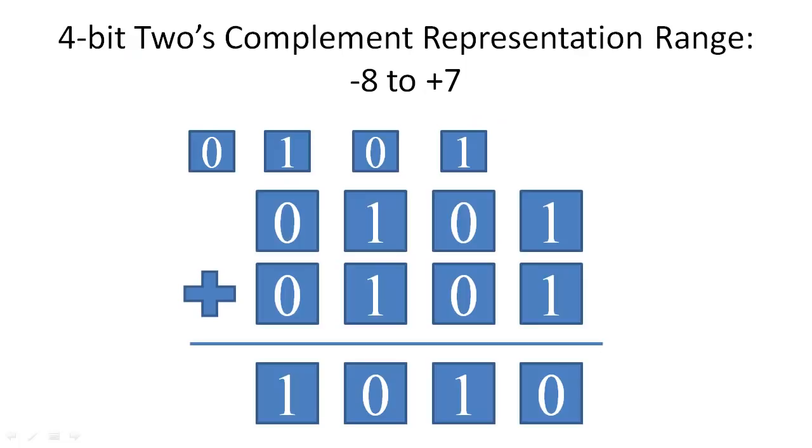Let's check out what happens when we add 5 plus 5. Notice how the most significant bit in the 4-bit number is 1, and indicates that the sum is a negative number. By adding these two positive numbers together, the magnitude of the sum, which was supposed to be 10, exceeded the limits of the representation, which was 7, and produced an error.